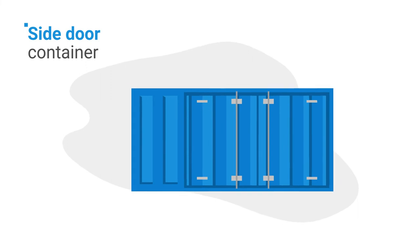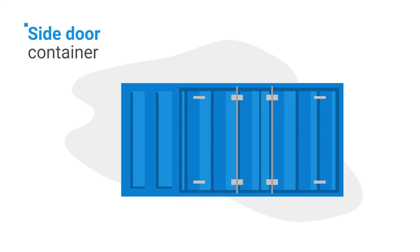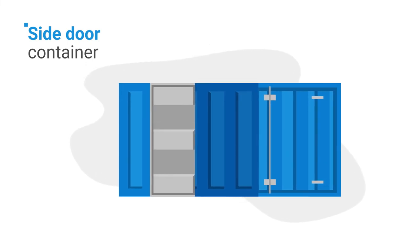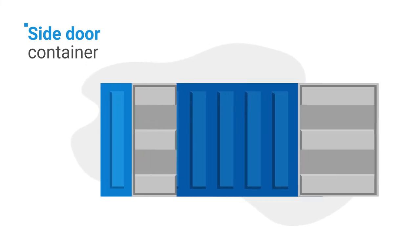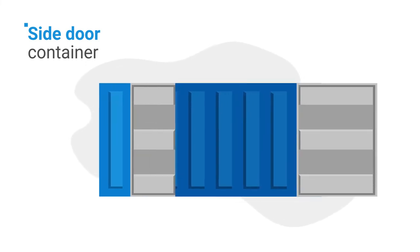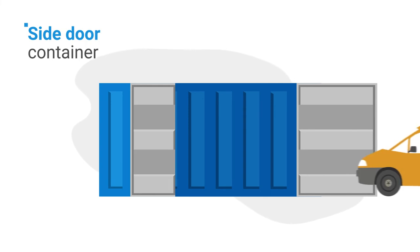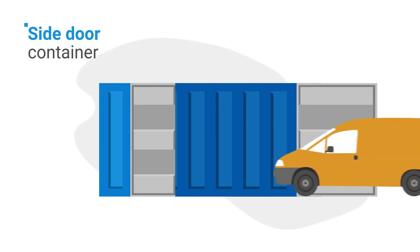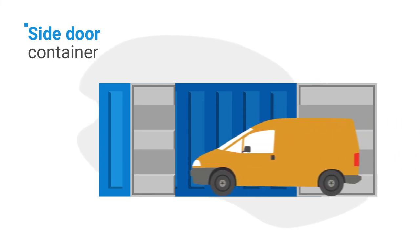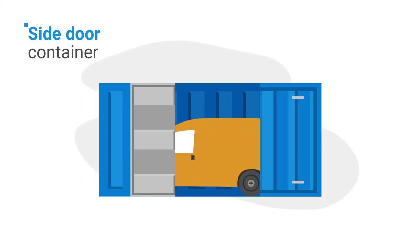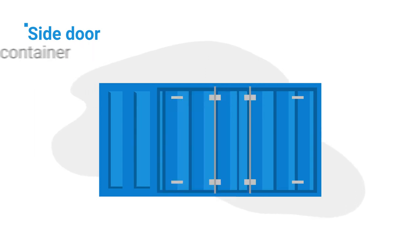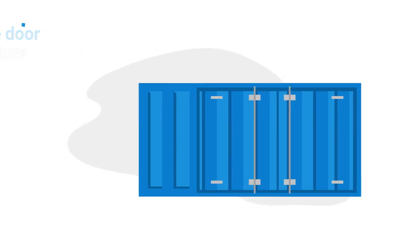7. Side Door Container. Side door, or open side containers, have extra doors on the long side of the container. This makes them easier to load and unload, because more workers can access cargo at once. And bulky cargo that doesn't fit through the end doors can be loaded through the side.